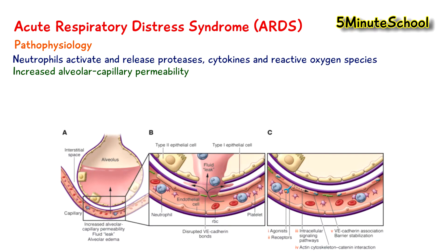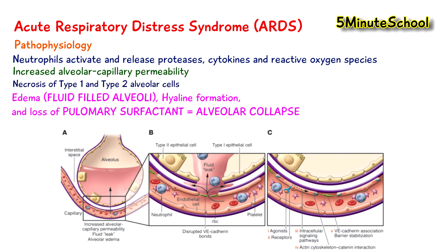The end result is that the type 1 and type 2 alveolar cells start to die, causing swelling. We have the formation of a hyaline membrane and loss of the pulmonary surfactant, which is what prevents the alveoli from collapsing. This leads to collapse of the alveoli, making gas exchange difficult.